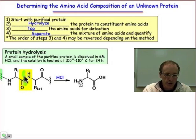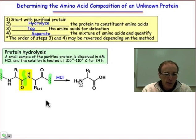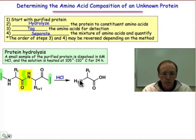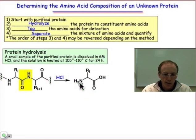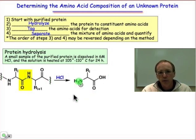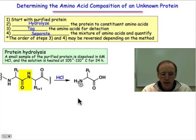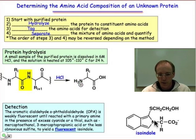Here the protein is represented as a repeating chain with undefined ends. The hydrolysis step breaks the amide linkage and produces individual amino acids as a mixture. At this point, the tagging step takes place, and for the most part today it involves a reaction that I'll show you on the next slide — the formation of an isoindole.